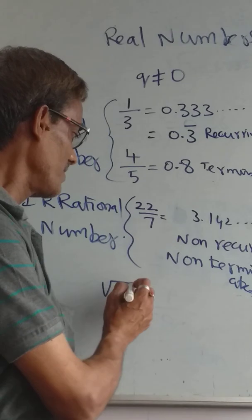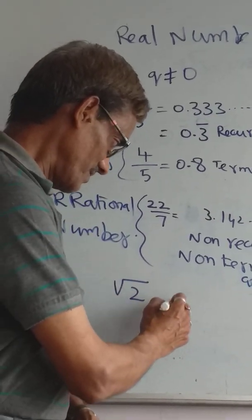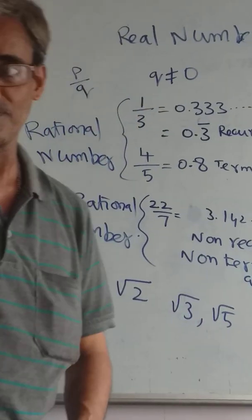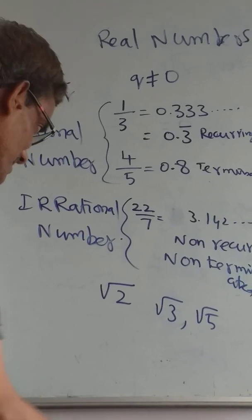All irrational numbers are in the form of surds. What are surds? Surds means square root of numbers. Those numbers we call surds or irrational numbers.